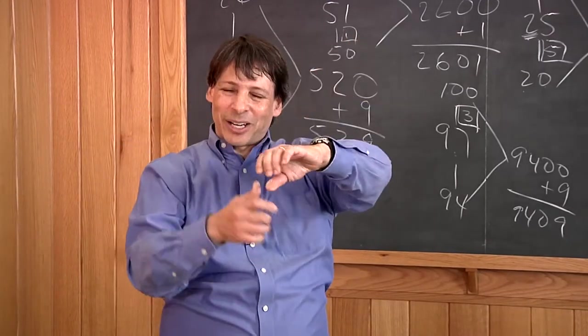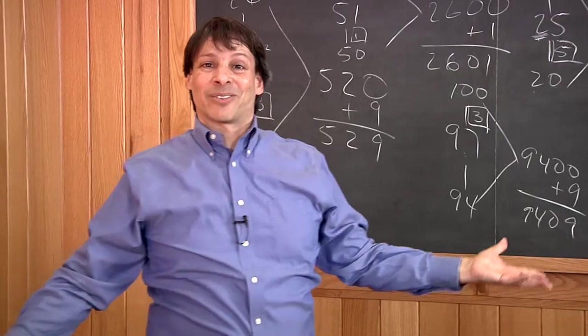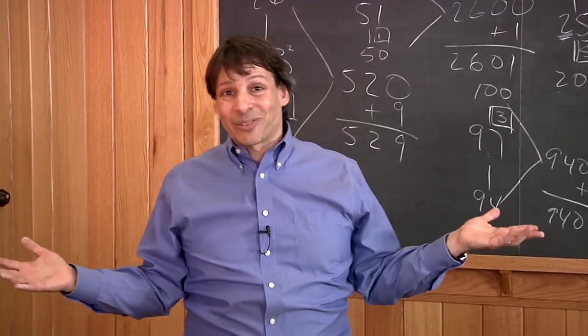I said, 108² - I went down 8 to 100, up 8 to 116, multiplied them together to get 11,600, added the square of 8, which is 64, to get 11,664.